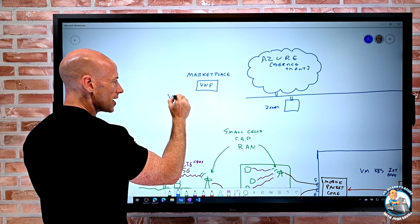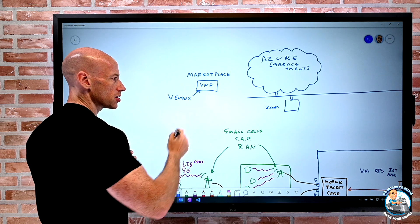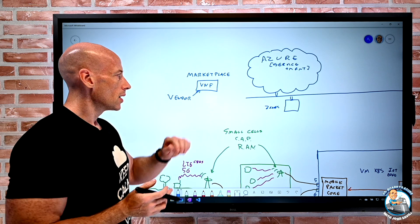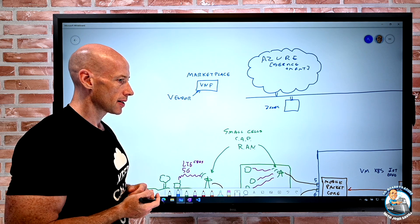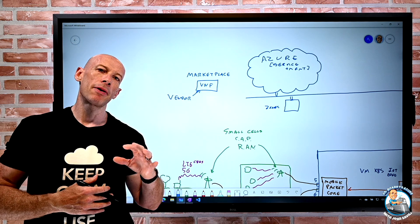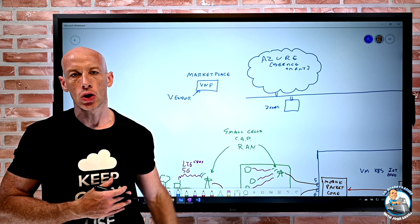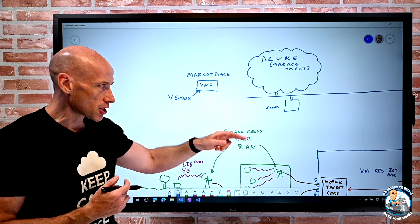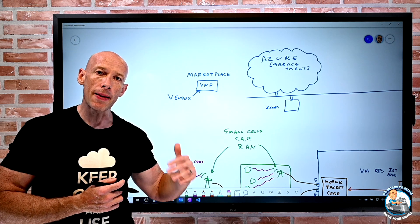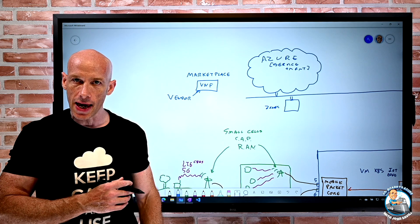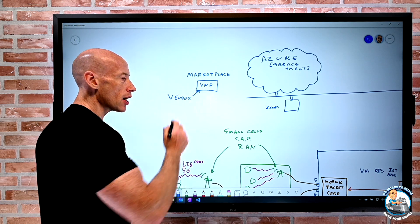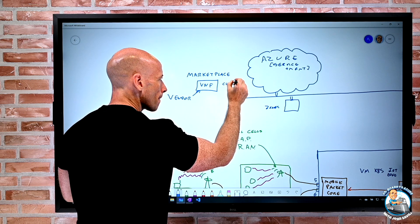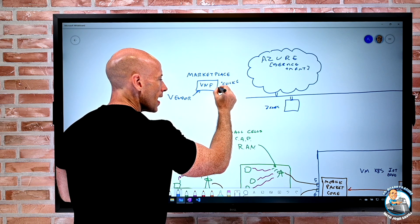I can have vendors create solutions. So I can actually have these virtual network functions. So as a vendor, I can publish my mobile packet core. I can publish my solution into the Azure marketplace. As the customer, what's likely happened is I've purchased a solution for one of these vendors. So they've shipped me the SIMs, they've shipped me the small cells. Now I need to deploy the packet core, this mobile packet core that brings it all together. I can literally go to the marketplace. I can click and it will deploy.